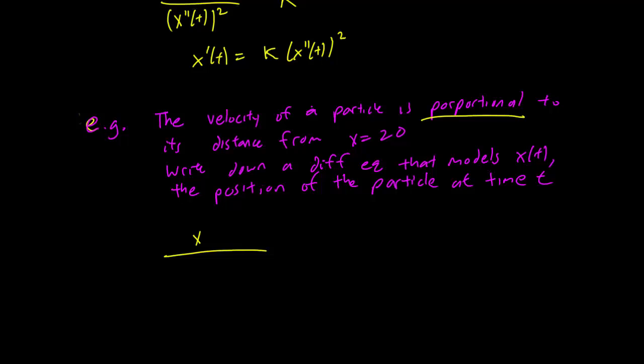which is the same as last time, x'(t). And on the bottom, the distance of the particle from the point x equals 20. So x remembers the position of the particle, and we want to figure out how far it is from the point 20. So in that case, it's just the absolute value of x from 20.